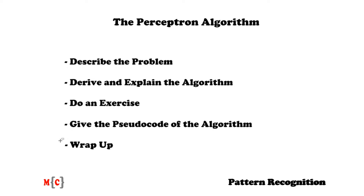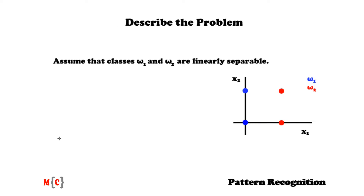So let's start with describing the problem. We have the problem of classifying unknown objects. Based on a training set of objects or a set of training vectors, we have to derive a way of deciding to what class a new object will belong to. For the problem, we have two classes, omega1 and omega2, and for these classes we assume that they are linearly separable.